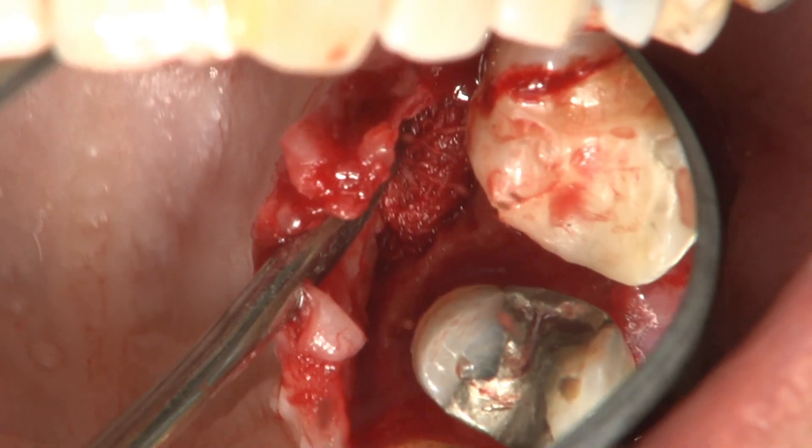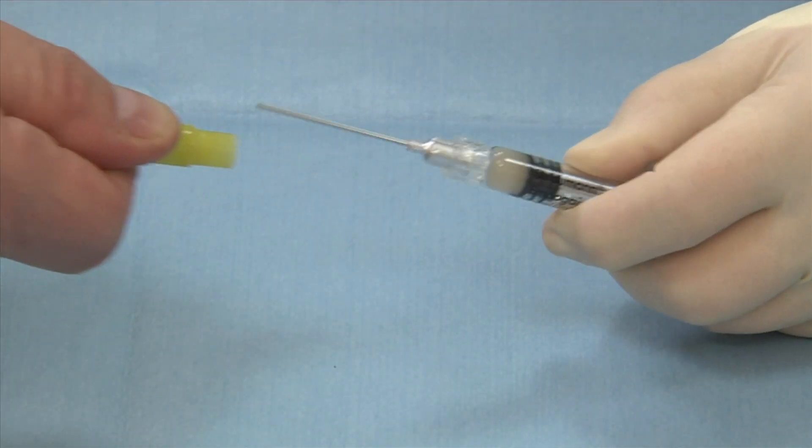Straumann Emdogain has demonstrated results in regrowing both soft tissue and clinical attachment.